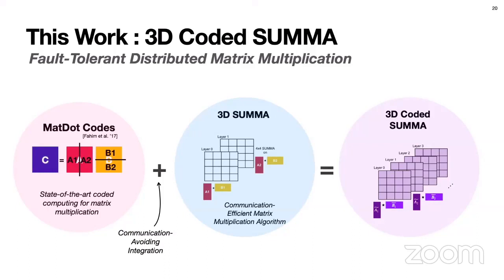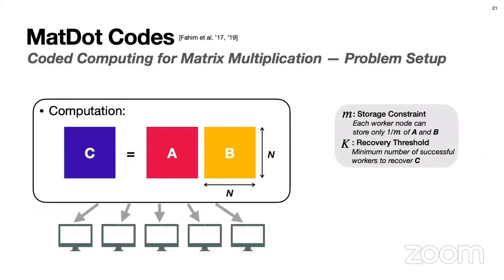MatDot codes is a coded computing technique for distributed matrix multiplication. The computation we want to perform is C = AB, where A, B, and C are all matrices — for simplicity, let's assume they are n-by-n matrices. We want to perform this over distributed nodes. There are two important parameters: M is a storage constraint, meaning each worker node can store only an M-fraction of A and B. And K is the recovery threshold — the minimum number of successful workers required to recover C. For example, if K is 4, any 4 nodes finishing computation successfully allows us to recover C.